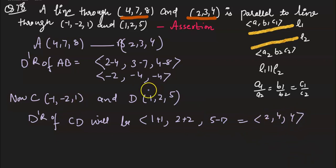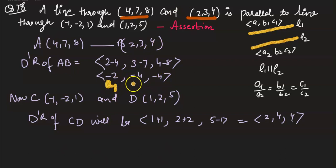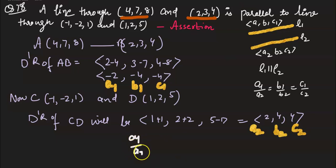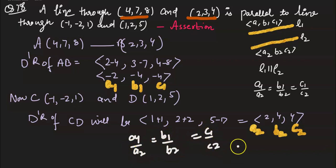The direction ratios are essentially the same because a negative sign is common. So we label AB as A1, B1, C1 and CD as A2, B2, C2. The ratio A1/A2, B1/B2, C1/C2 gives us minus 2 upon 2, minus 4 upon 4, and minus 4 upon 4 — the ratios are the same.